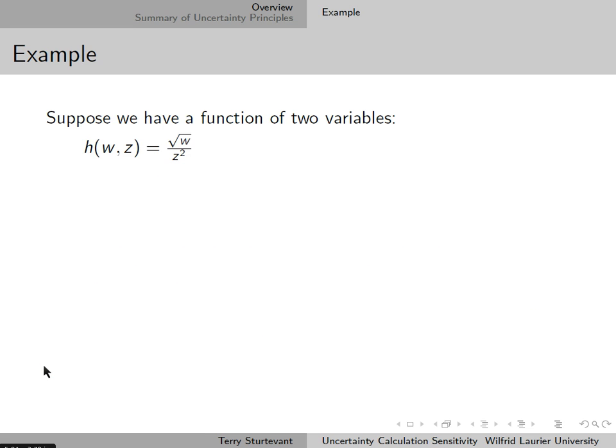For example, suppose we have a function of two variables: h of w and z equals the square root of w over z squared. So by inspection,